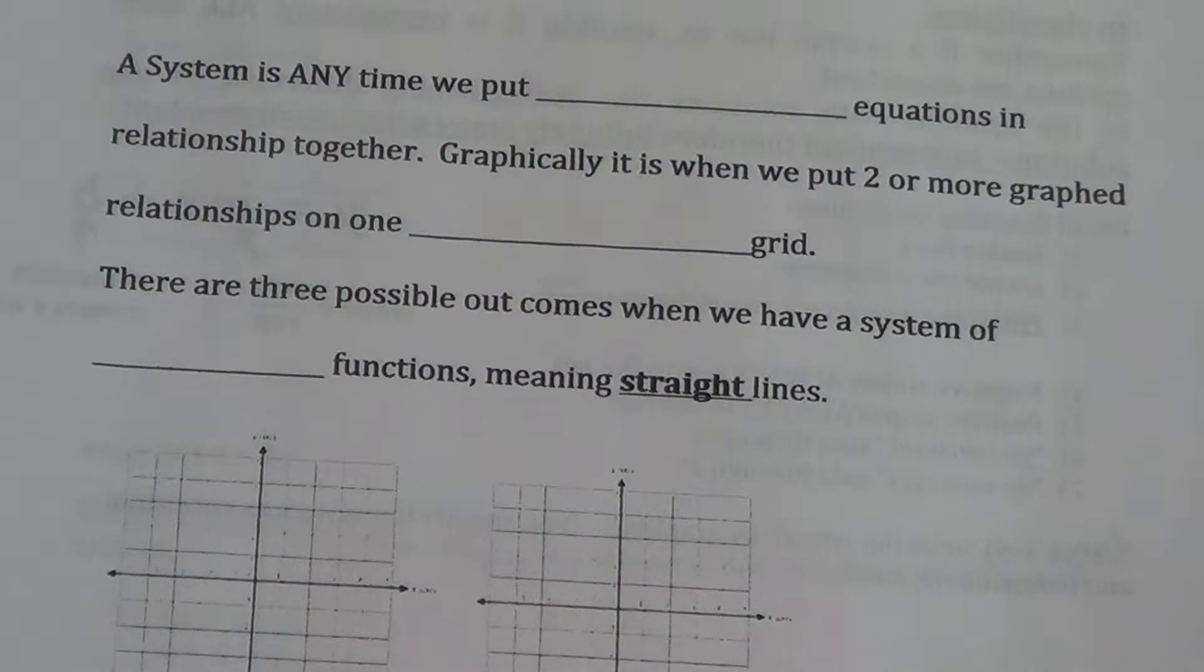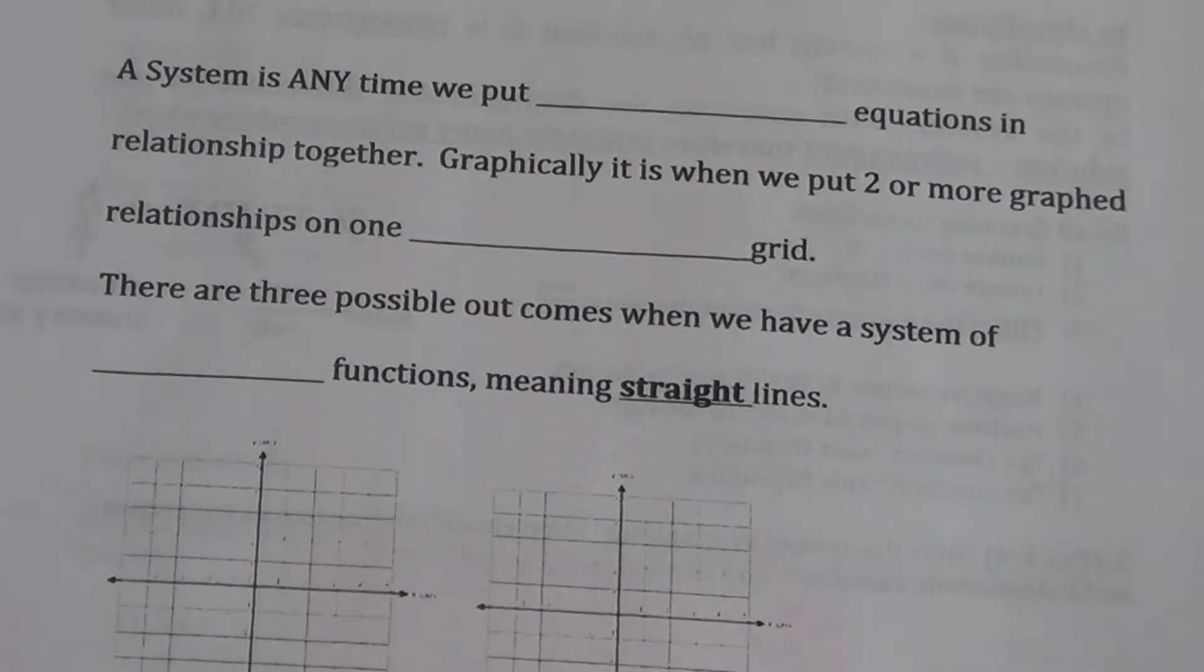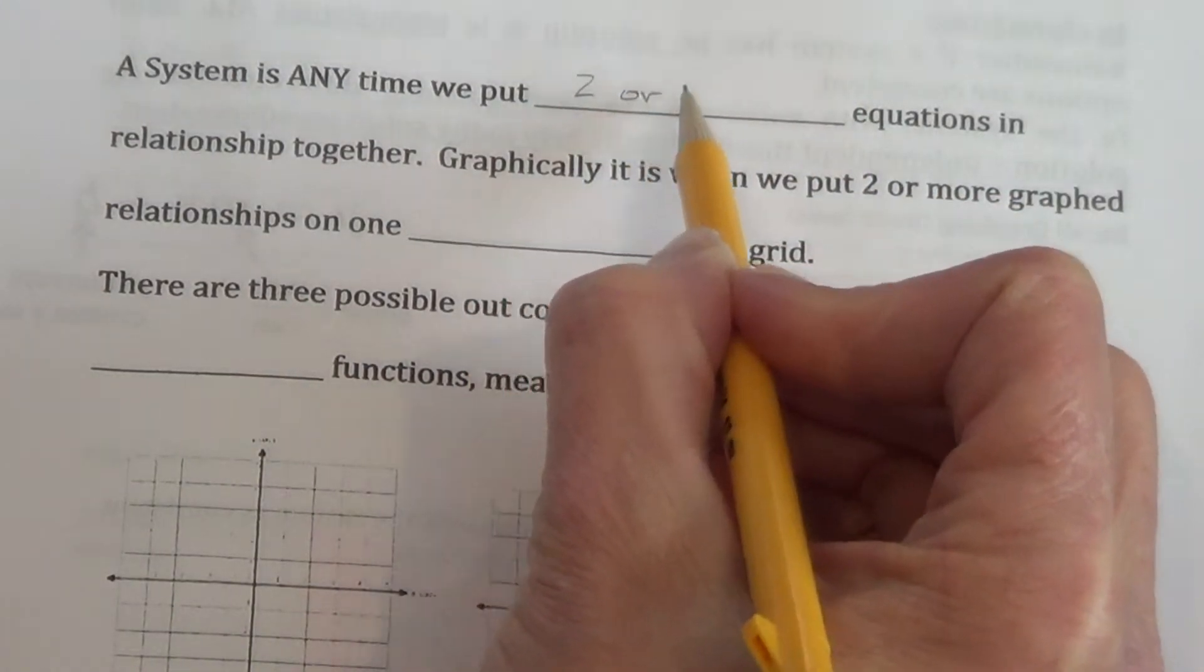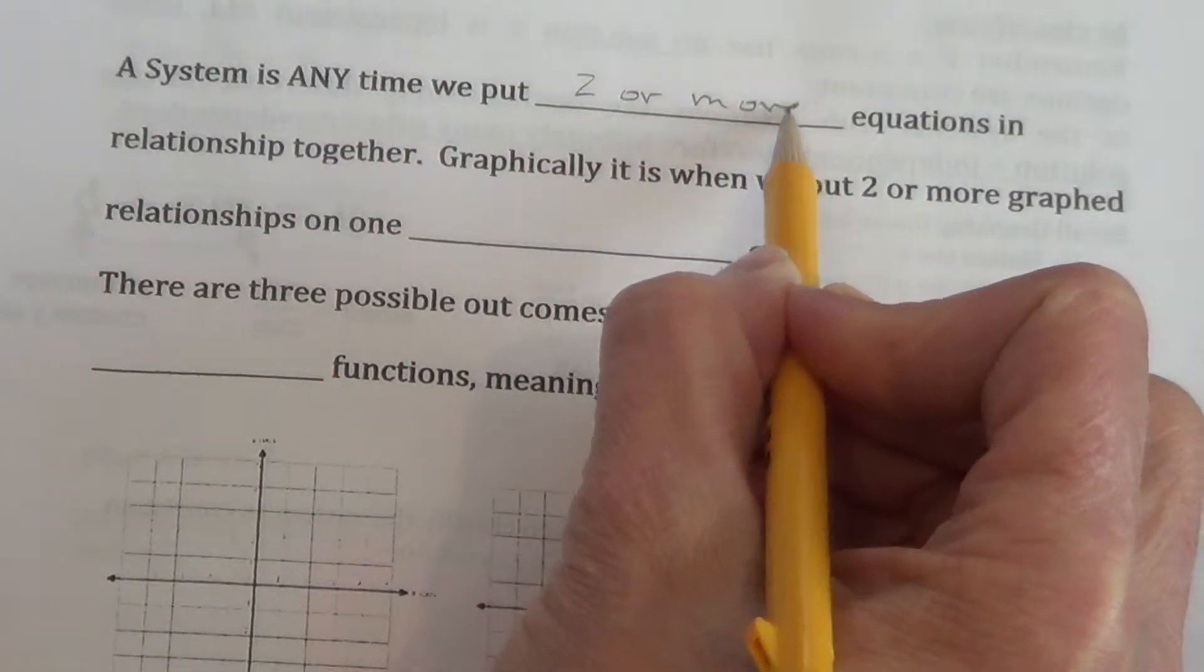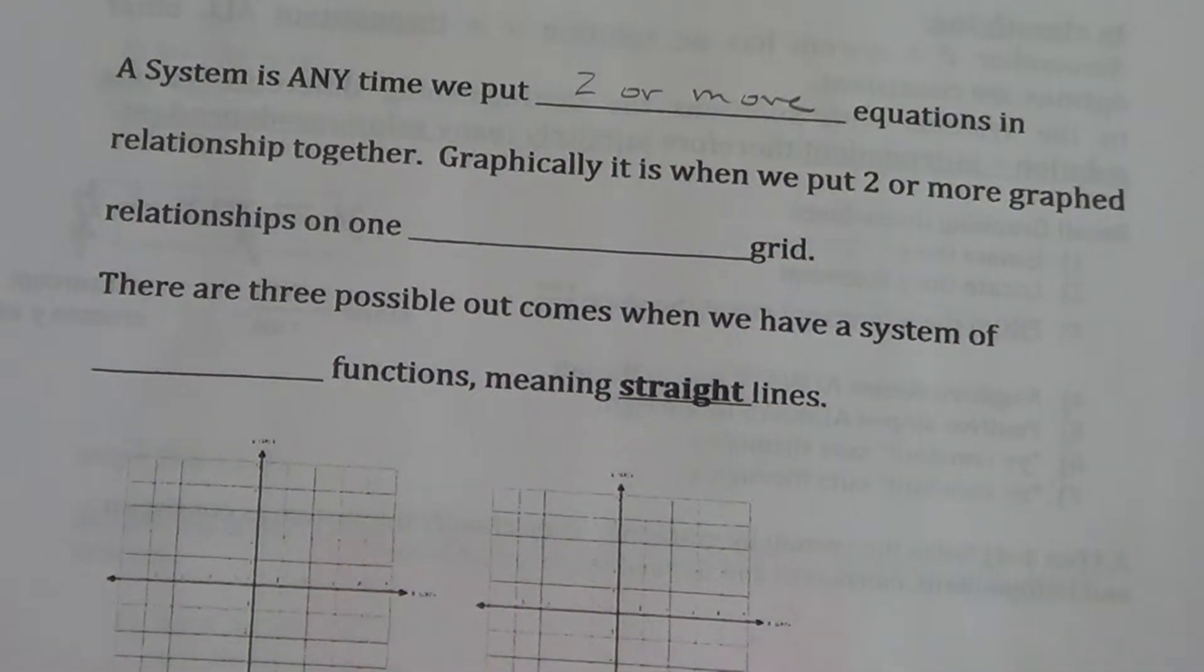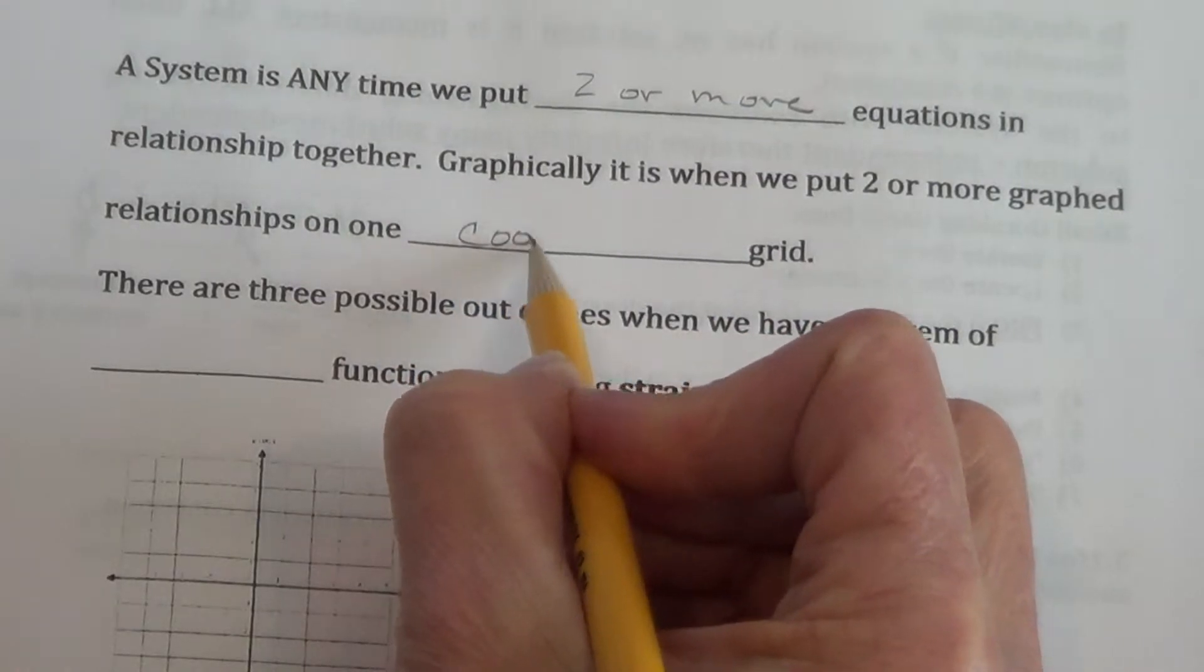Let's read through this first page. This is page 3. It's the first stuff to fill out for you. It says a system is anytime we put two or more equations in relationship together. Graphically, it is when we put two or more graphed relationships on one coordinate grid.